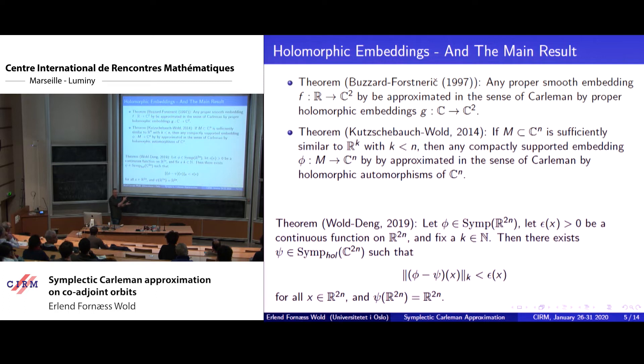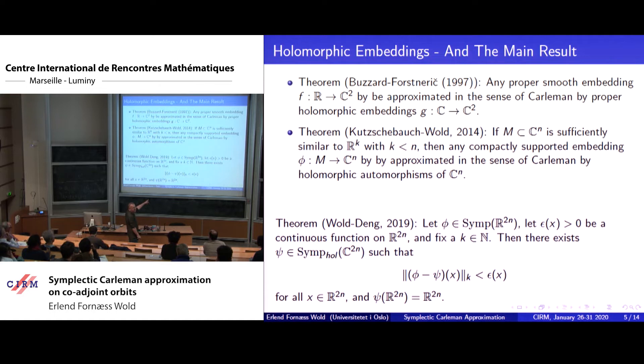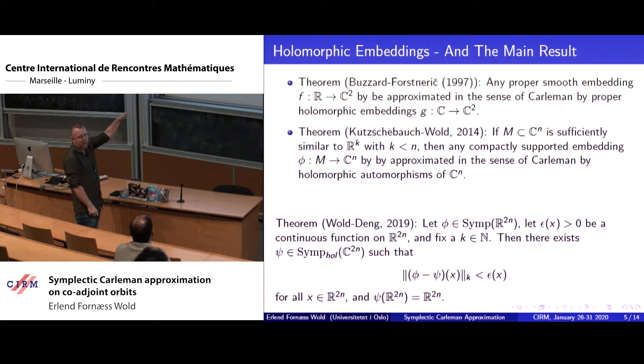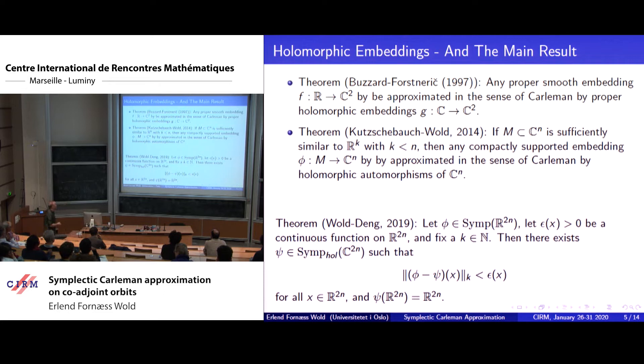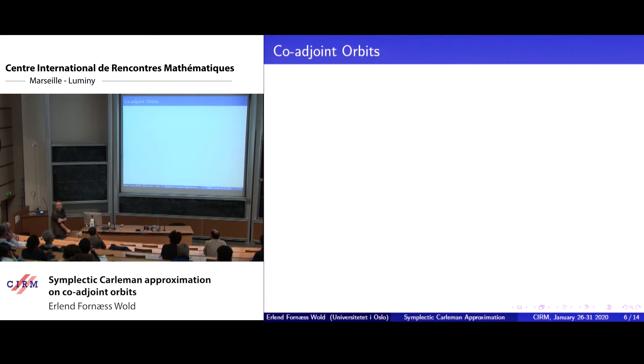This main theorem is a special case of a more general result — you can produce many more totally real submanifolds of complex symplectic manifolds for which such theorems hold. I'm going to start by describing a more general setup. In the title I had coadjoint orbits, so I'll say something about that.